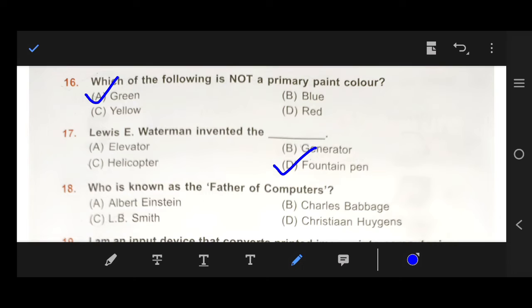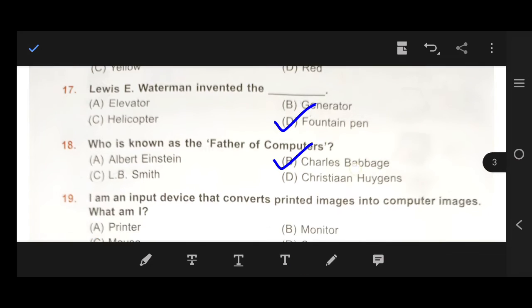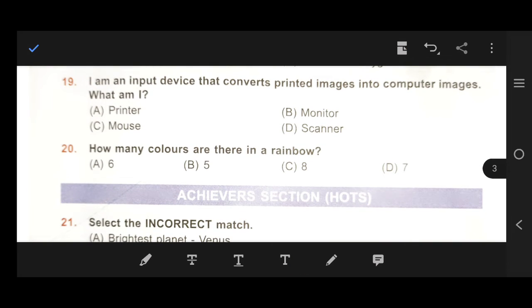Number 18, who is known as the father of computer? Our right answer is B, Charles Babbage. Right answer, Charles Babbage. Next, number 19, I am an input device that converts printed image into computer image. What am I? Our right answer is scanner. Next, how many colors are there in a rainbow? It's very easy. D, seven colors.